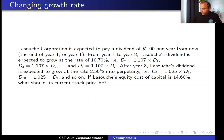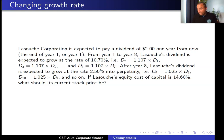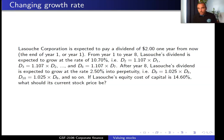We will go over the dividend growth model when we have a growth rate that is changing over time. Lassos Corporation is expected to pay a dividend of two dollars one year from now. From year one to eight, the dividend is expected to grow at the rate of 10.7 percent — so D2 is 10.7 percent larger than D1, D3 is 10.7 percent larger than D2, and so on up to D8. After year eight, Lassos' dividend is expected to grow at the rate of 2.5 percent into perpetuity.